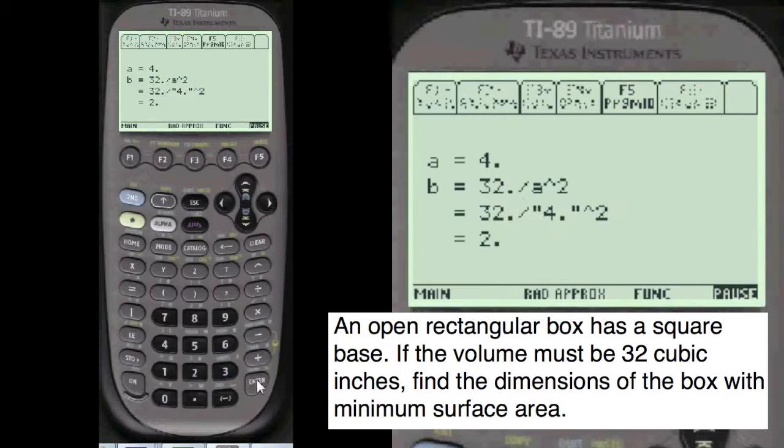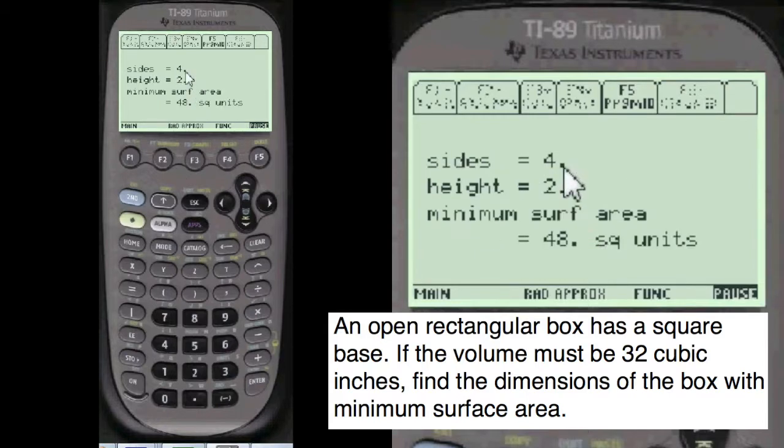And so you do all these calculations. You got size equals 4, height equals 2, minimum surface area is equal to 48 square units.